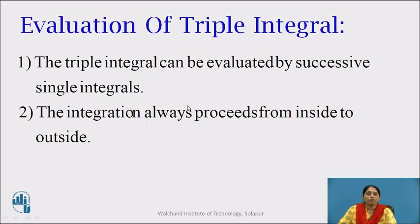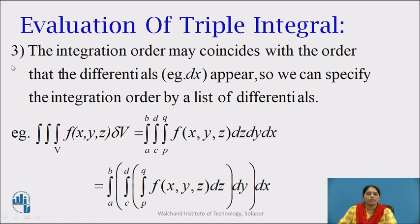Now let us see the evaluation of the triple integral. There are some rules to evaluate a triple integral. Rule 1: the triple integral can be evaluated by successive single integrals. Rule 2: the integration always proceeds from inside to outside. Rule 3: the integration order coincides with the order that the differentials — for example, dx or dy — appear, so we can specify the integration order by a list of differentials.